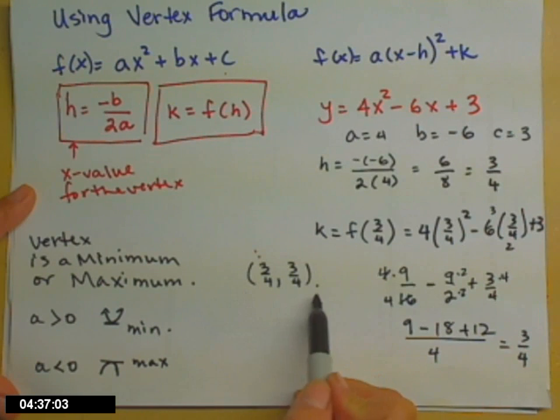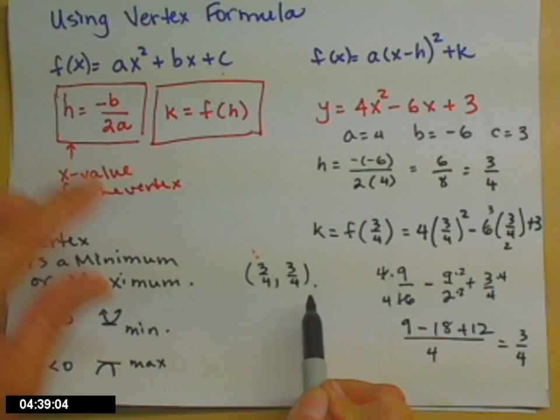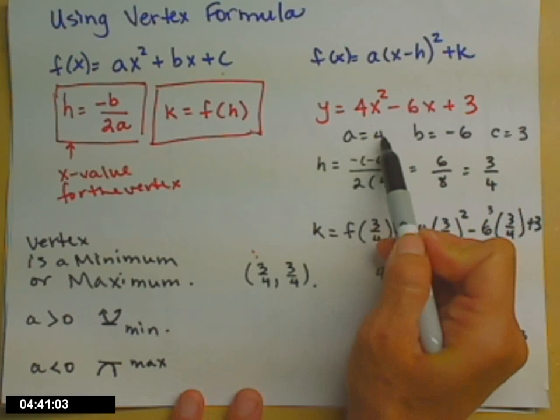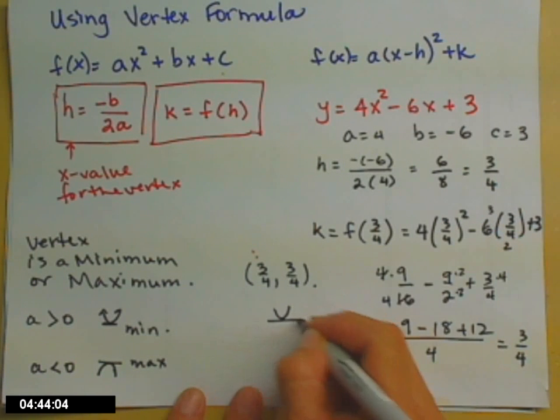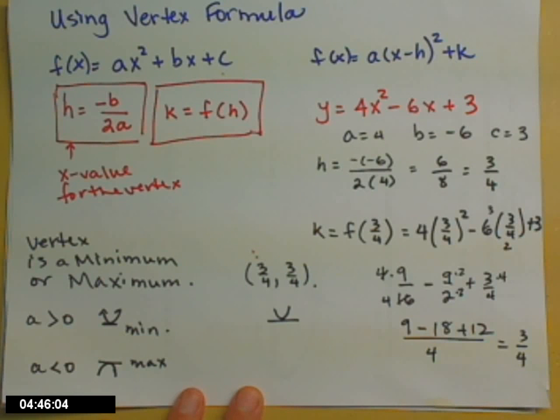So, for us, the vertex, 3 fourths, 3 fourths, since my a value is positive 4, this parabola opens up. So, that 3 fourths, 3 fourths is the minimum value.